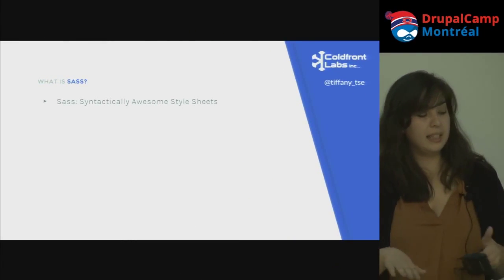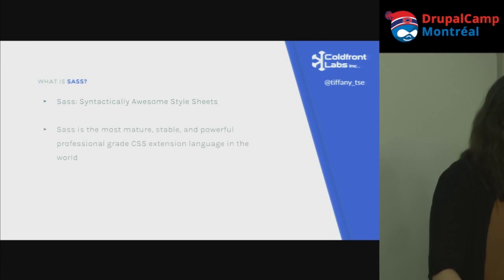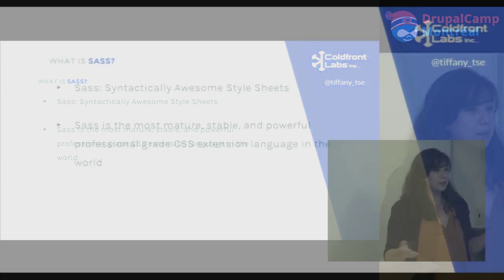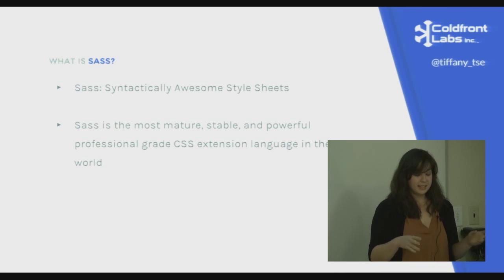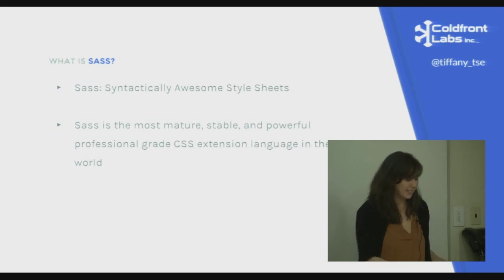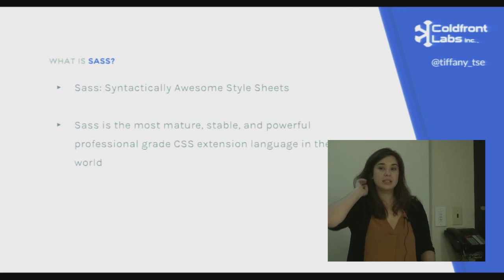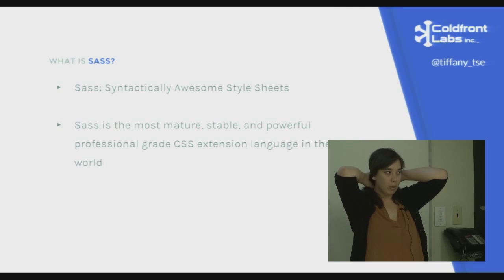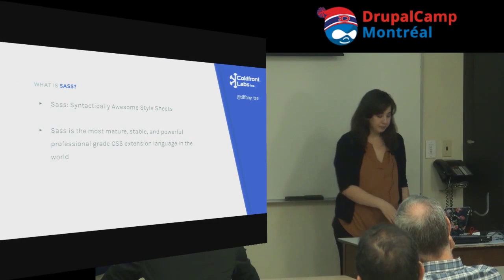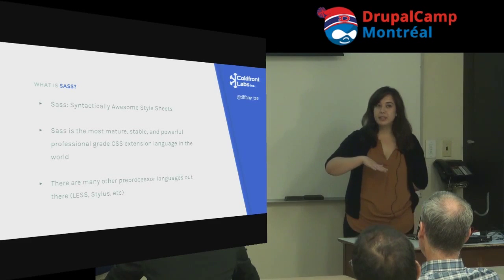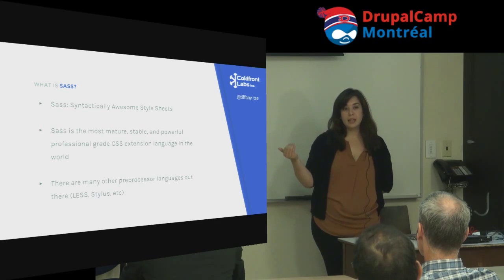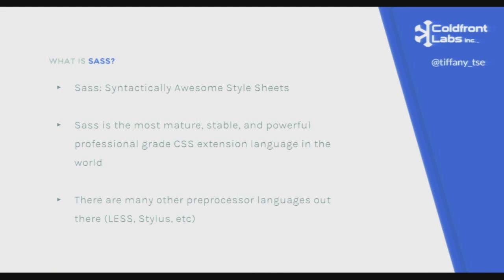Sass stands for Syntactically Awesome Style Sheets. According to their website, it's the most mature, stable, and powerful professional-grade CSS extension language in the world. Most people I know use Sass, Less, or Stylus — but most of the people I talk to use Sass. There are many preprocessor languages out there; they all do similar things rooted in object-oriented programming concepts but with slightly different syntax.